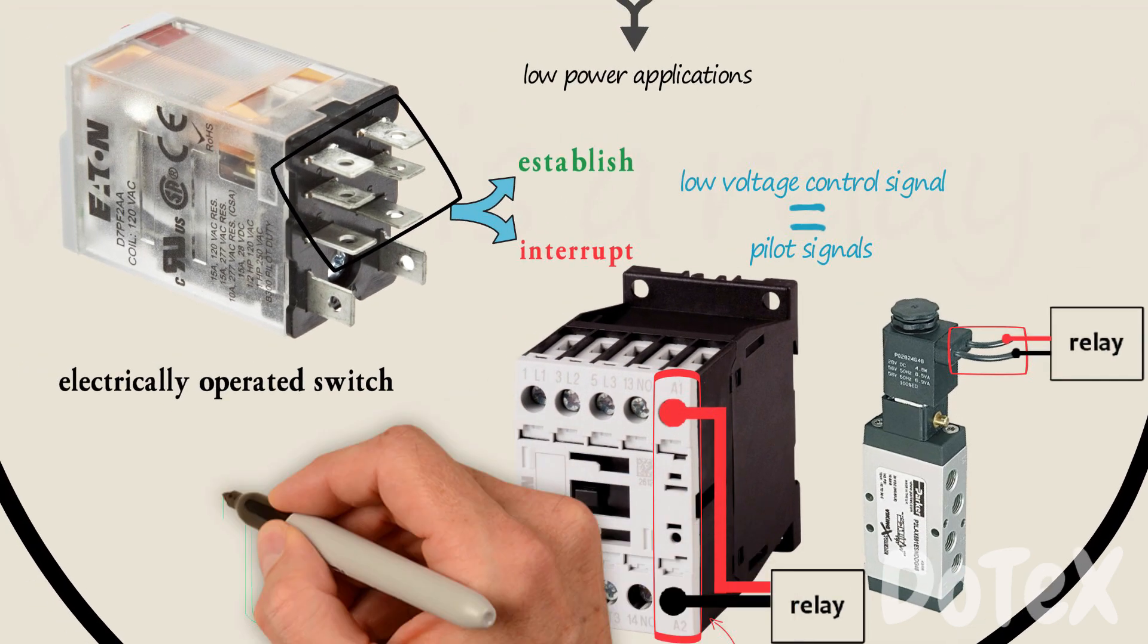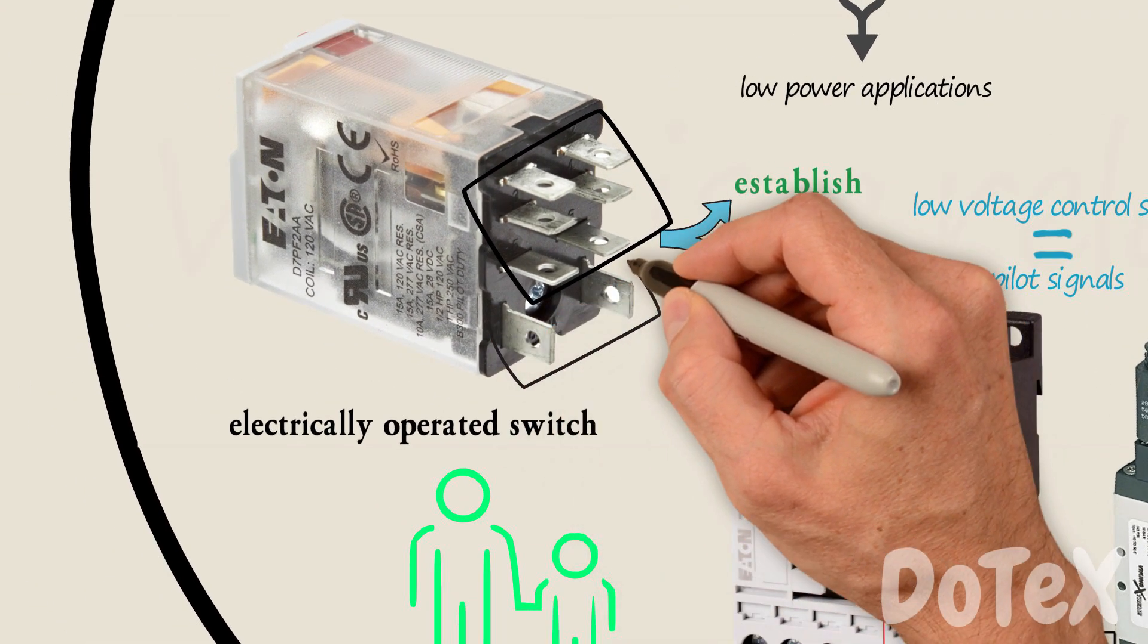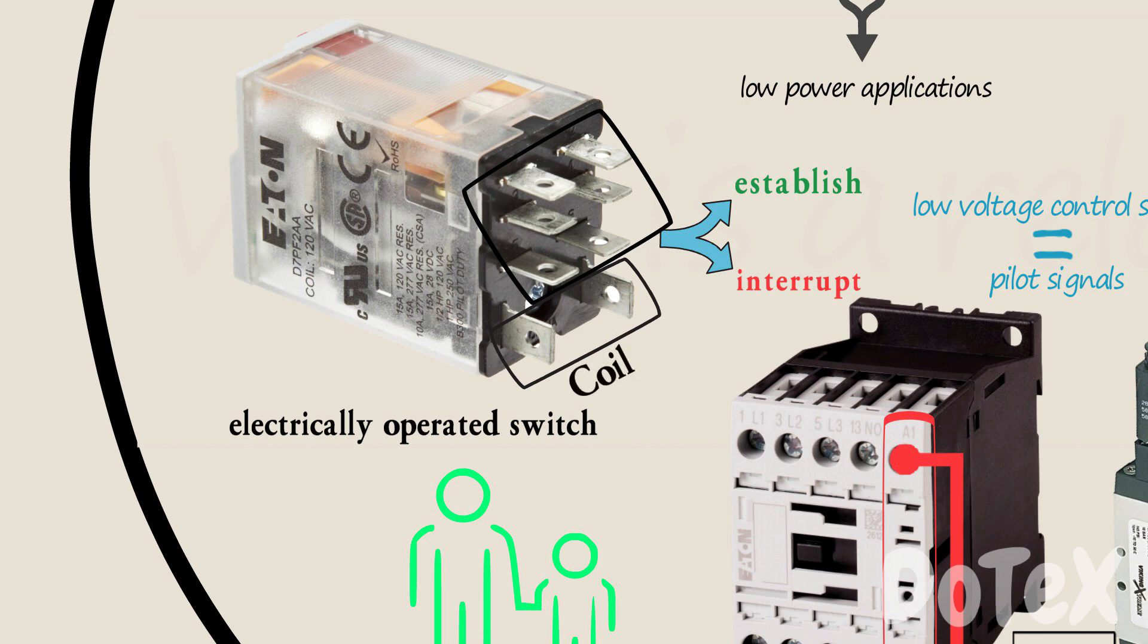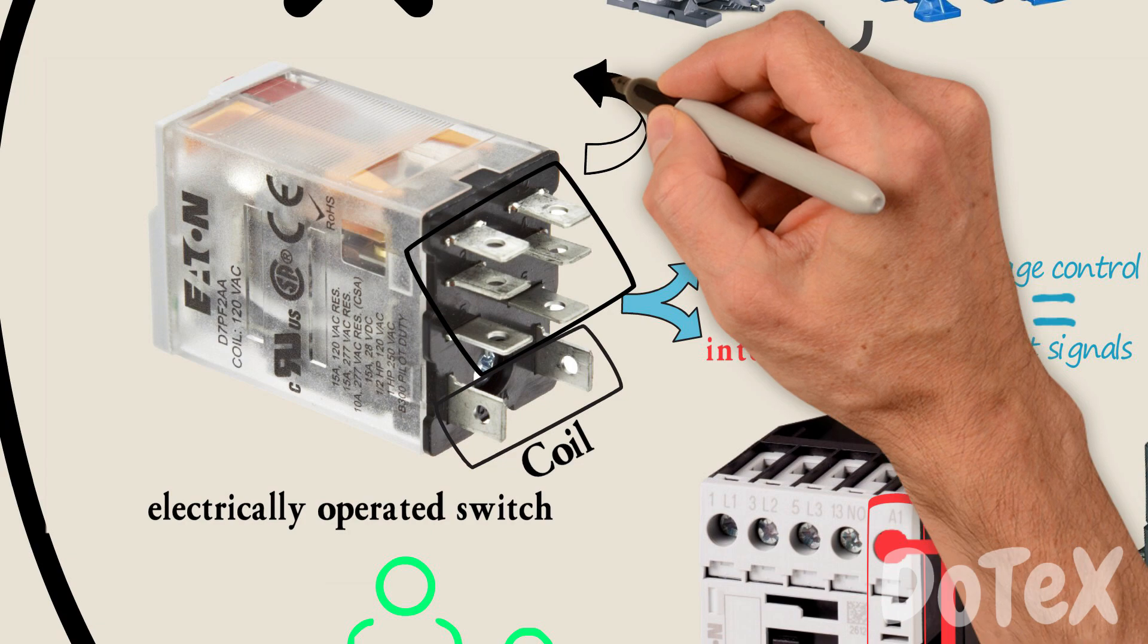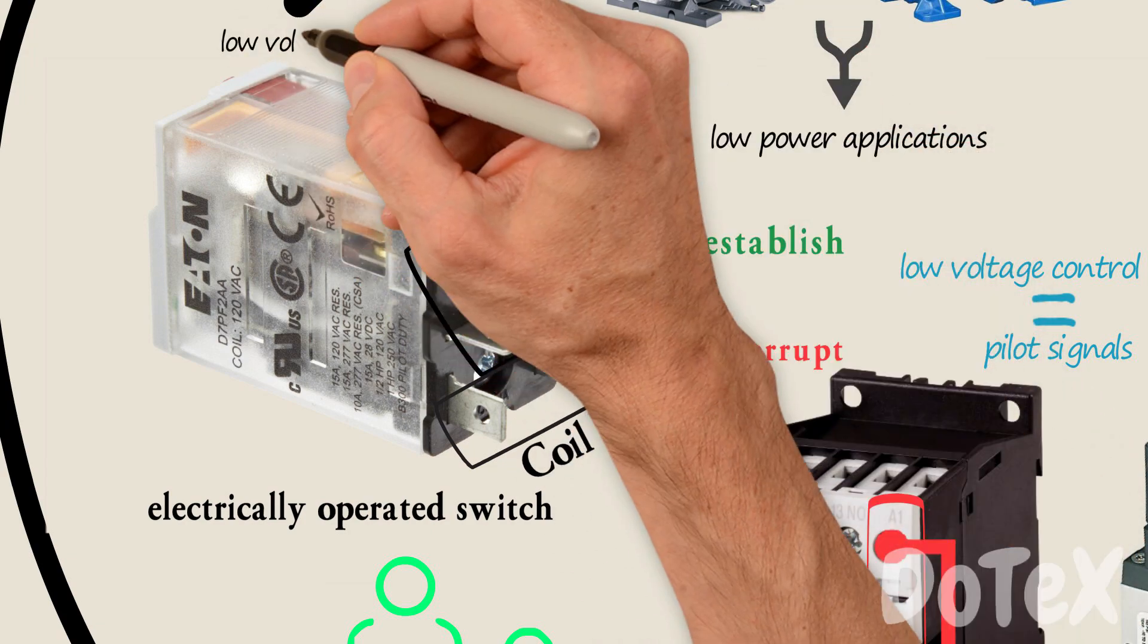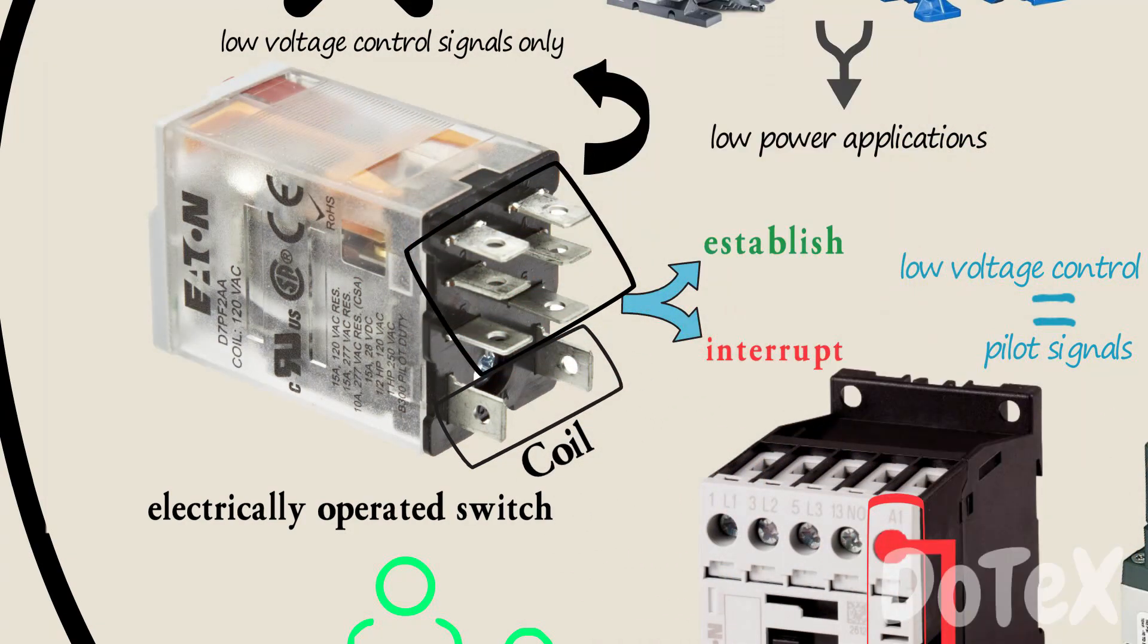A contactor is the big brother of a relay. A relay also has a coil and the connected contacts. The main difference is these contacts are usually rated for low voltage control signals only.